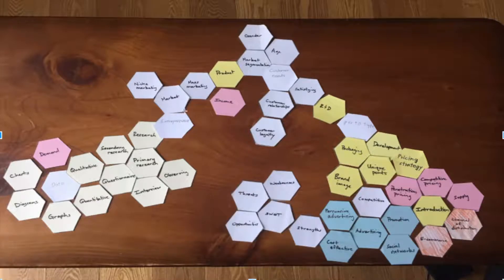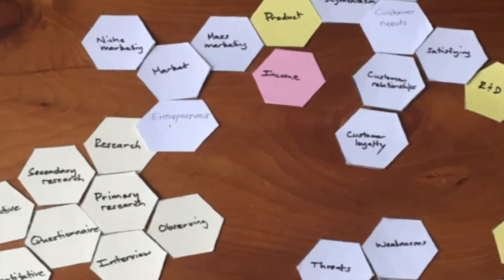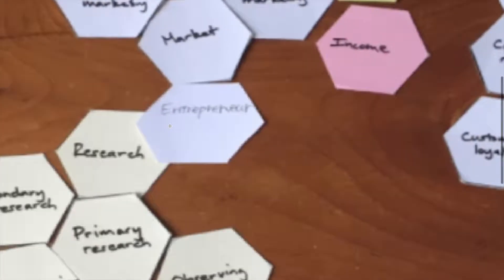One day, there was an entrepreneur called Bob. He has already decided that he is going to start up a new business, but he has not decided what type of business he is going to make.